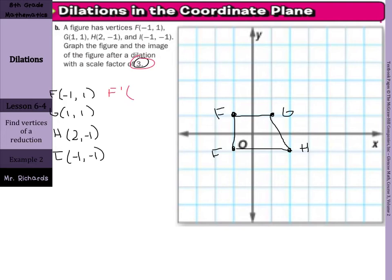So -1 times 3 is -3, 1 times 3 is 3. For G prime, 1 times 3 is 3, 1 times 3 is 3. For H prime, 2 times 3 is 6, -1 times 3 is -3. For I prime, -1 times 3 is -3, -1 times 3 is -3.